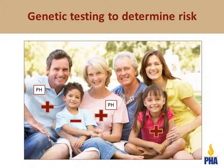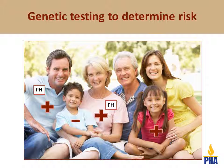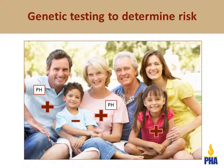If there is a known pulmonary hypertension genetic mutation in the family, anyone who tests negative for the mutation is extremely unlikely to develop pulmonary hypertension in the future. This can be a relief to those family members. Furthermore, if those family members are negative for the mutation, there is no risk for their children to have the mutation. What you don't have, you can't pass down.